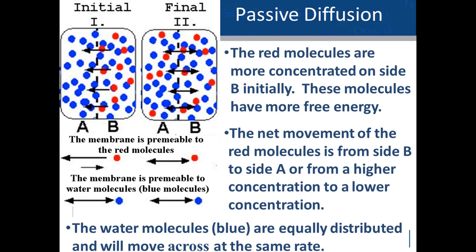This is a net movement because molecules do have the ability to move back. So the arrows should be one large arrow from B to A and a smaller arrow from A to B. The water molecules are equally distributed on both sides, so they move across the membrane at the same rate. This is passive diffusion — the membrane is permeable to those molecules, and they move from higher to lower concentration.